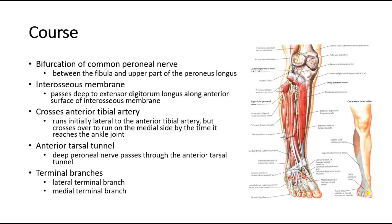For its course, it starts at the bifurcation of the common perineal nerve, between the fibula and upper part of the perineus longus, then passes deep to extensor digitorum longus along the anterior surface of the interosseous membrane.